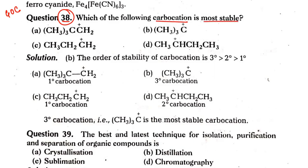First of all, what is carbocation? Look at the name of carbocation. Carbocation has a feeling of carbon and it has a positive charge. So if carbon has a positive charge in organic compounds — any carbon, terminal, middle, any carbon — then you call it carbocation.